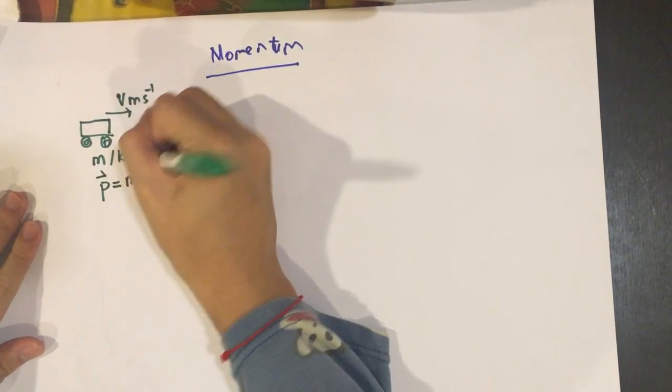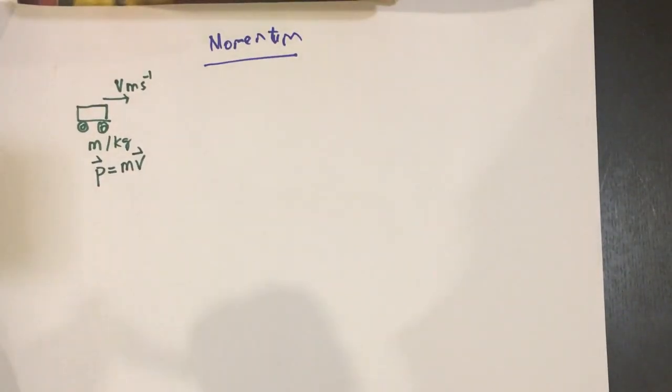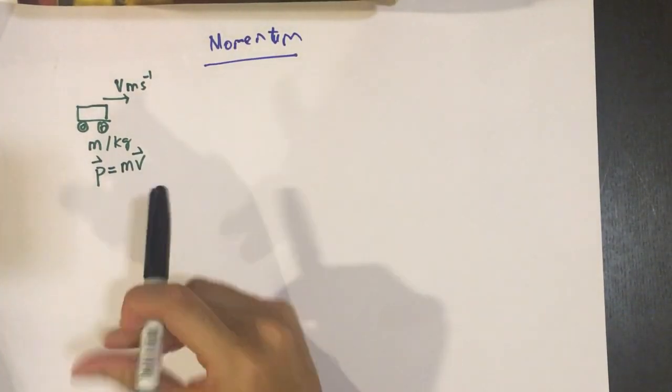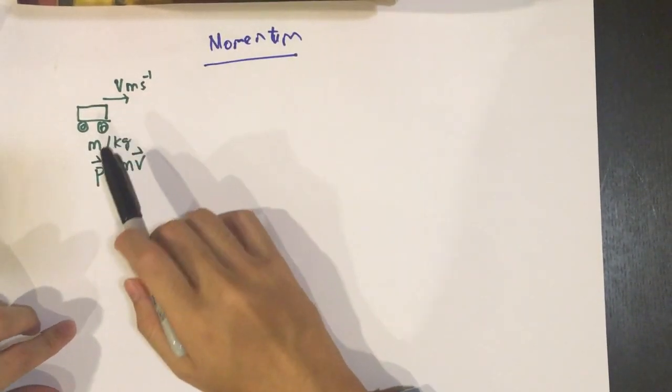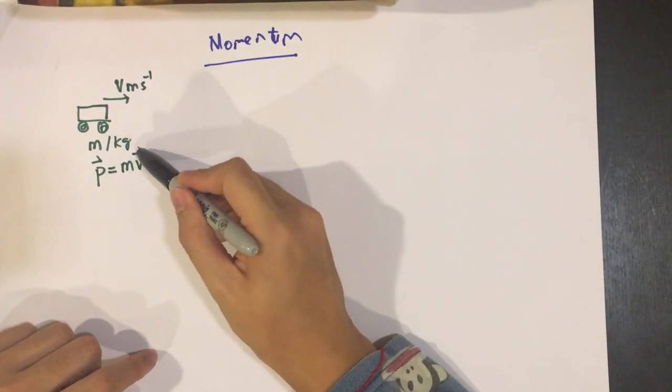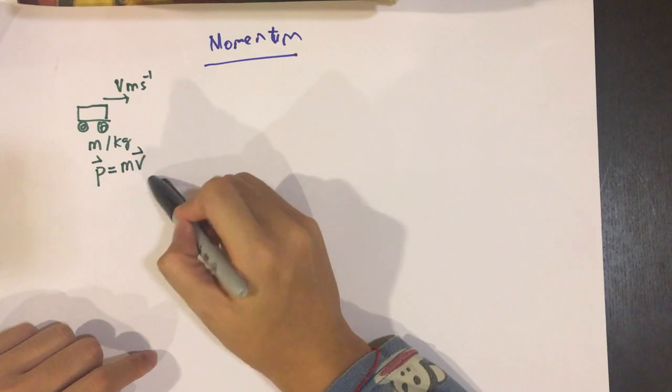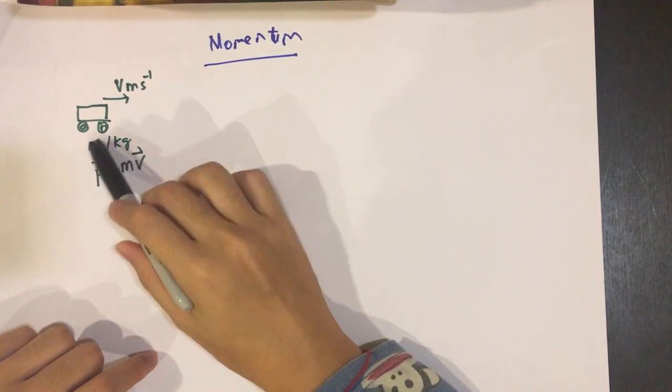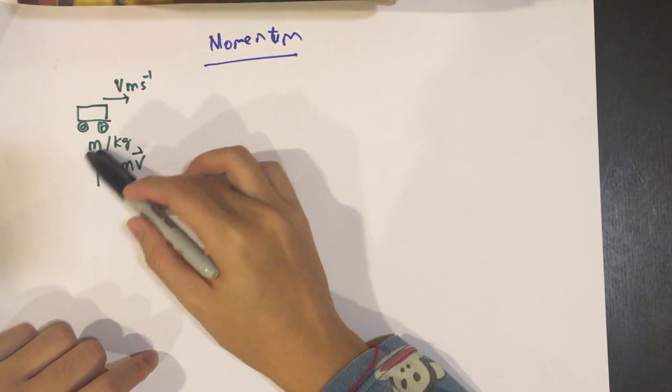And momentum, remember, is a vector. We write it with this up arrow, in vector notation of course. Because velocity is a vector, and if you take a product of the velocity vector, you will end up with a vector as well, which we call the momentum vector.